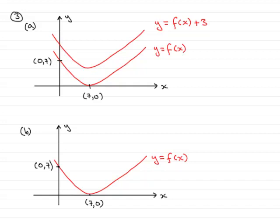What we need to do is write in the minimum point, which is this point. It will still be 7 across, but it will be 3 up.